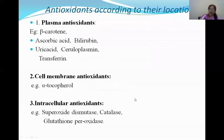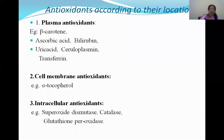Antioxidants according to their location: some antioxidants are present in the plasma, some in the cell membrane, and some intracellular. Plasma antioxidants include beta-carotene, ascorbic acid, bilirubin, uric acid, ceruloplasmin, and transferrin.